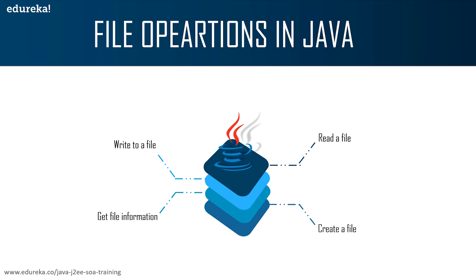Let's understand all these things with the help of an example. To create a file, you use the createNewFile method. This method returns true if the file was successfully created and returns false if the file already exists.